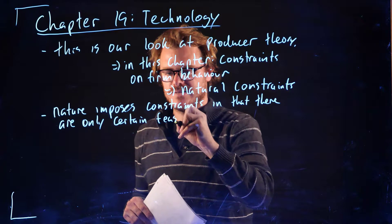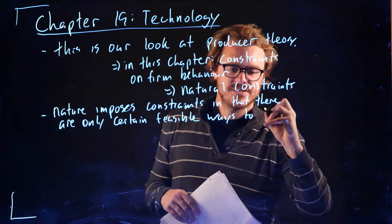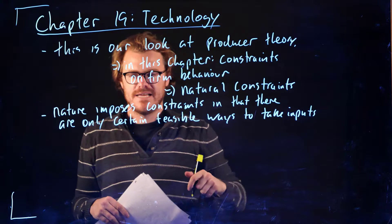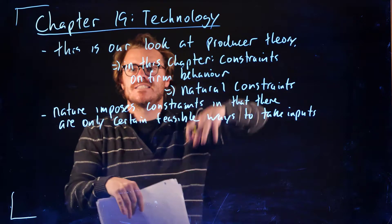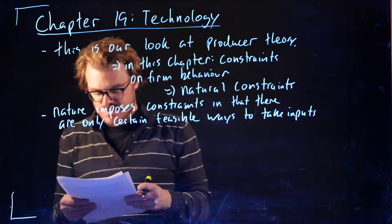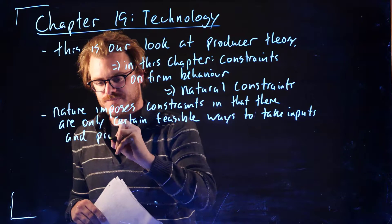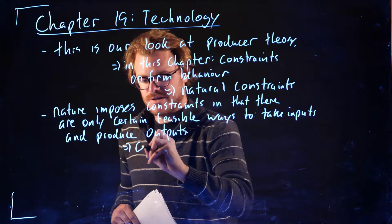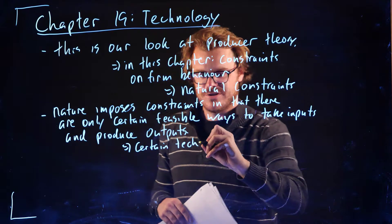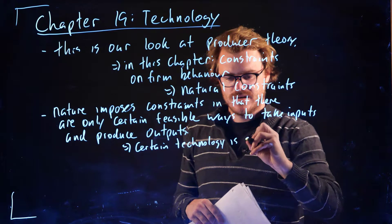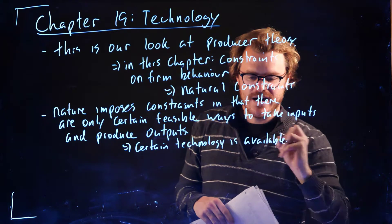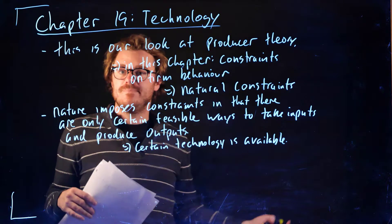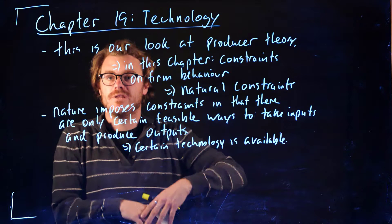There are certain feasible ways to take inputs and produce outputs. You take inputs into some kind of black box and get outputs as a result. We only have certain technology - certain technology is available. Maybe that technology is changing over time, but if we're looking at a certain point in time, they have a certain technology to take these inputs into their production capabilities and produce something as a result.